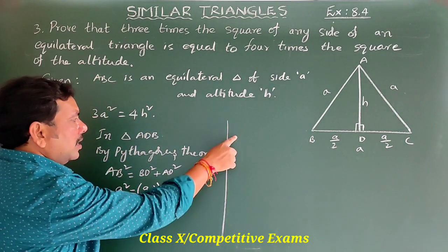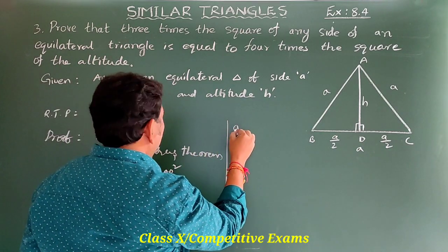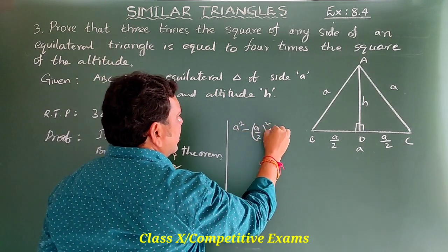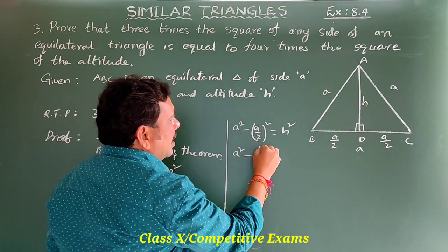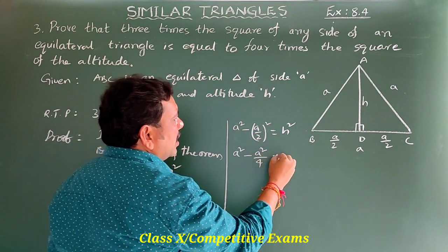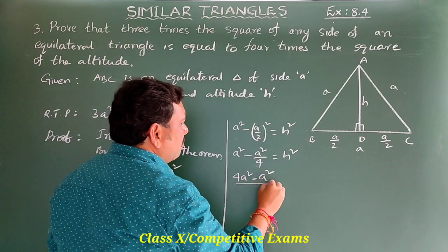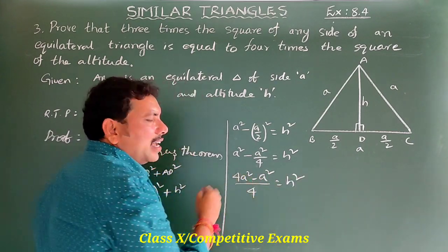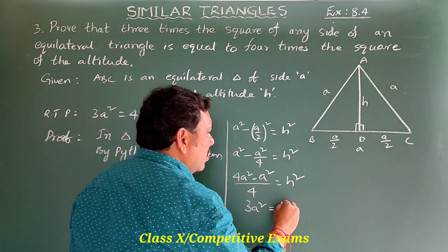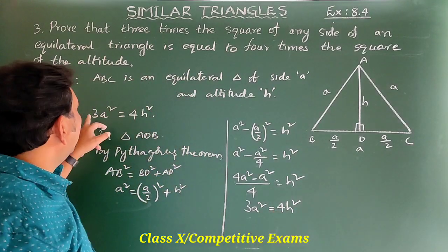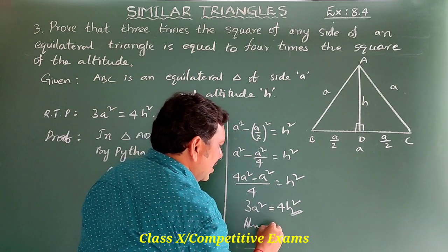Transferring (A/2)² to the other side: A² − (A/2)² = H², which gives A² − A²/4 = H². So (4A² − A²)/4 = H², meaning 3A²/4 = H². Therefore, 3A² = 4H².